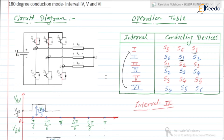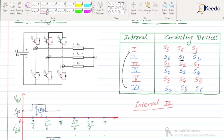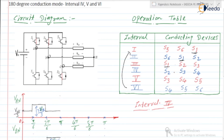Hello friends, in this video we are going to discuss the circuit operation of the 180-degree conduction mode three-phase inverter for intervals 4, 5, and 6. So let us discuss interval number 4.